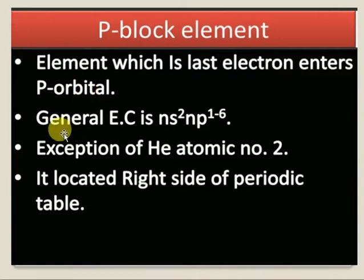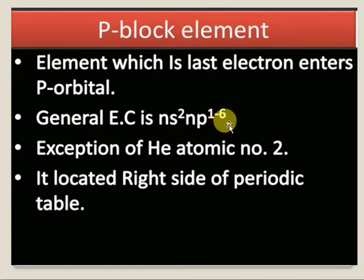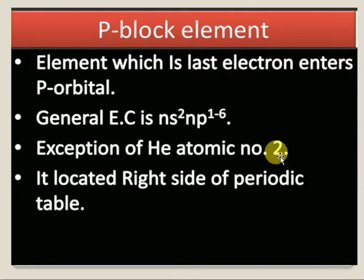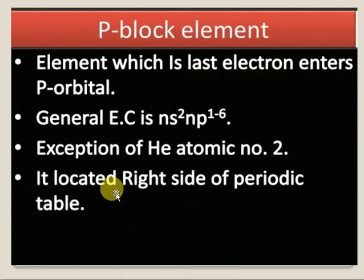The general electronic configuration of P-block elements is ns² np¹⁻⁶. The '1 to 6' refers to the six groups in the P-block. Except Helium, which has atomic number 2 with configuration 1s², Helium is placed in the P-block because of its properties. P-block elements are located on the right-hand side of the periodic table.